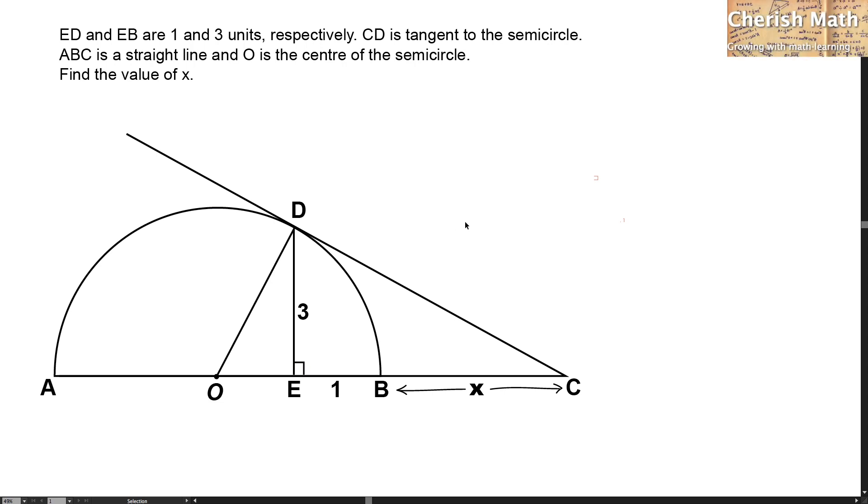Say hi from Cherish Math. This is the question. ED and EB are 1 and 3 units, respectively. CD is tangent to the semicircle. ABC is a straight line and O is the center of the semicircle. Find the value of x.